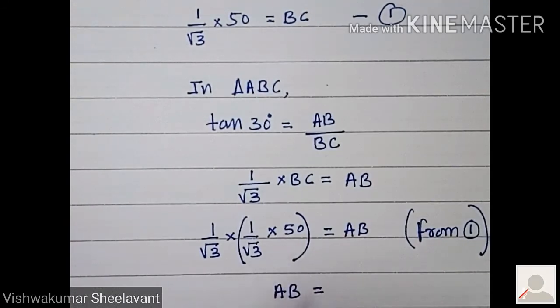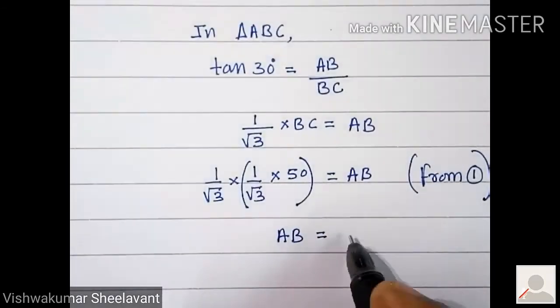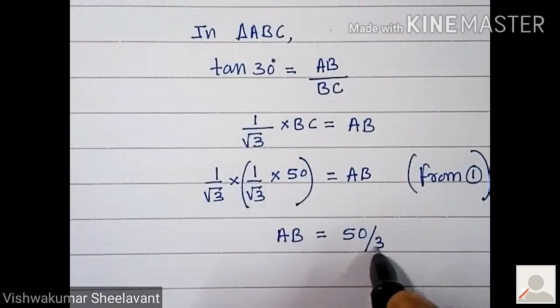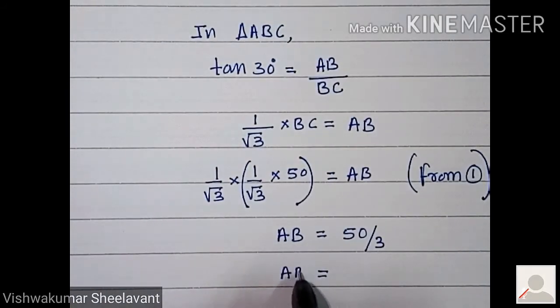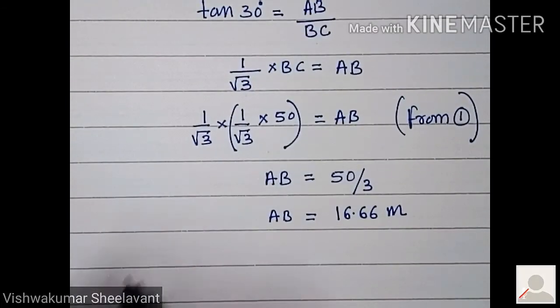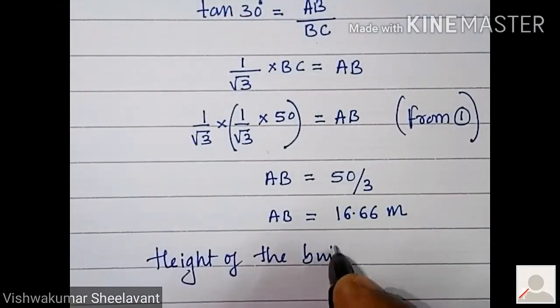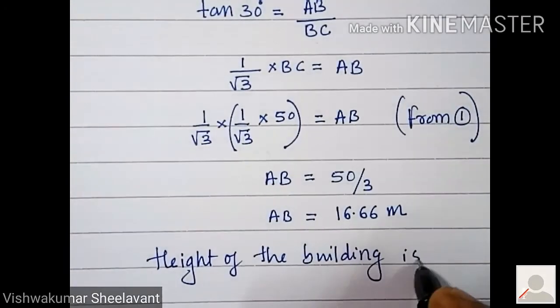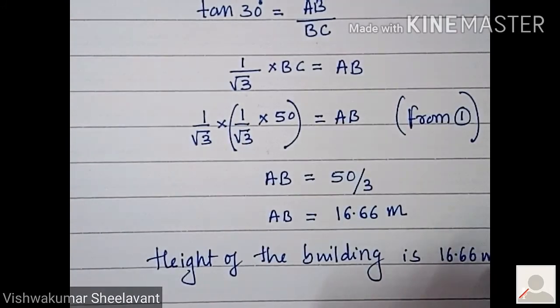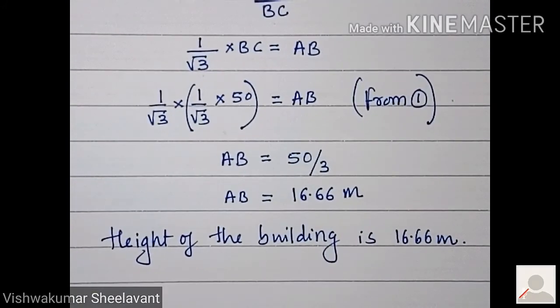So AB equals 50 by 3, so AB equals 16.66 meters. Height of the building is 16.66 meters.